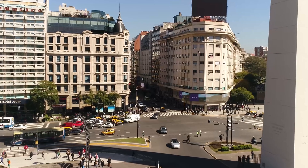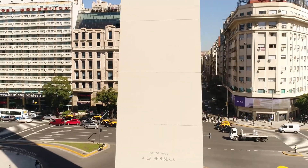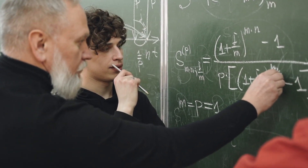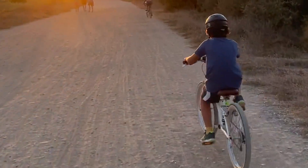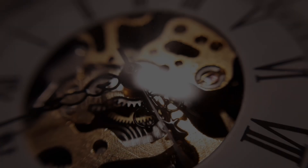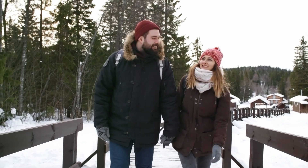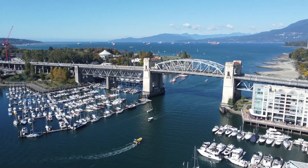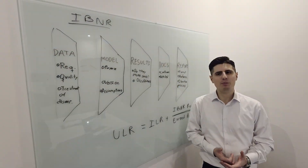In a world where uncertainty is constant and complexity is growing, actuarial science provides more than just numbers. It offers a way to think, a way to ask the right questions, solve meaningful risk problems and guide decisions that affect real lives. As risks evolve, we must respond not by chasing precision for its own sake, but by designing systems that are transparent, adaptable and grounded in human values. Because at its core, actuarial work isn't just about predicting the future — it's about helping build a future that we can navigate with clarity, resilience and purpose. That's the true power of actuarial thinking.